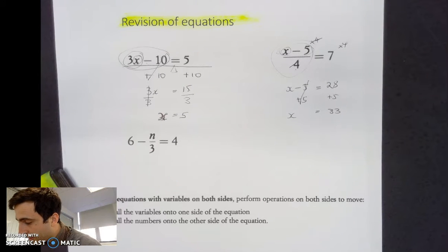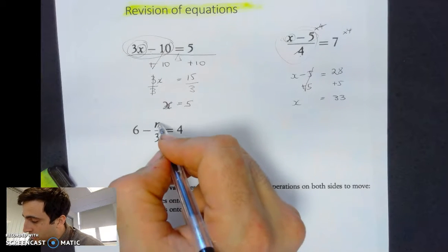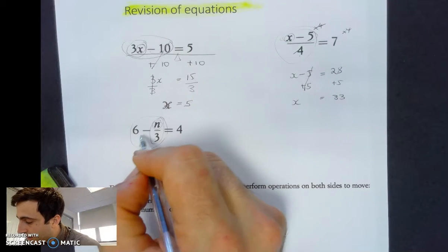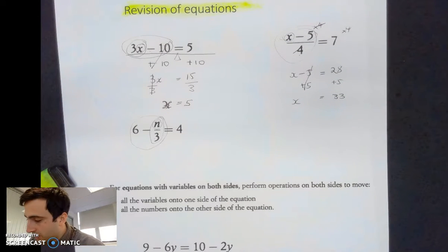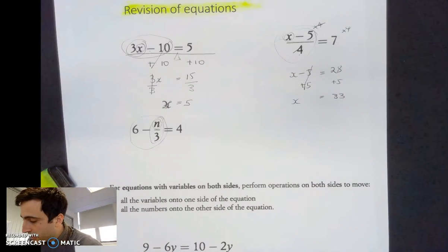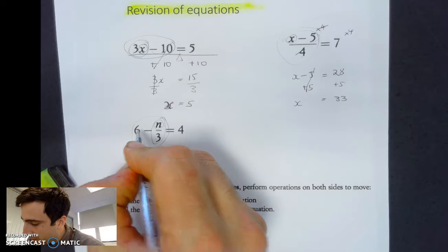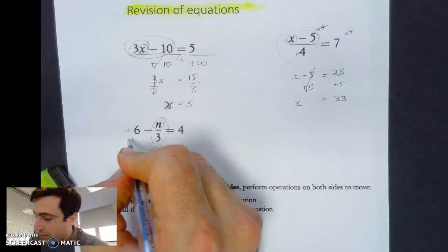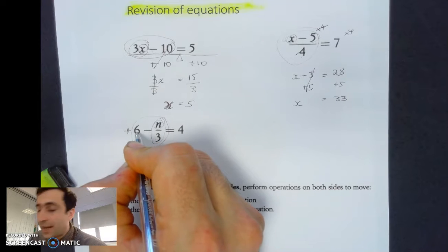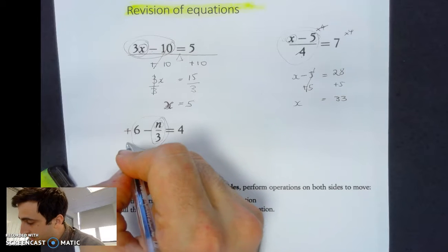Now this one here is slightly different. We've got n divided by 3 and then we've got the 6 out front. It's slightly different because of this minus, but we'll get to that in just a moment. So what's the first thing we want to get rid of? Well, it's this 6. But is this 6 a minus or is it a plus? Well, it's absolutely a plus - it is a positive 6 out the front.